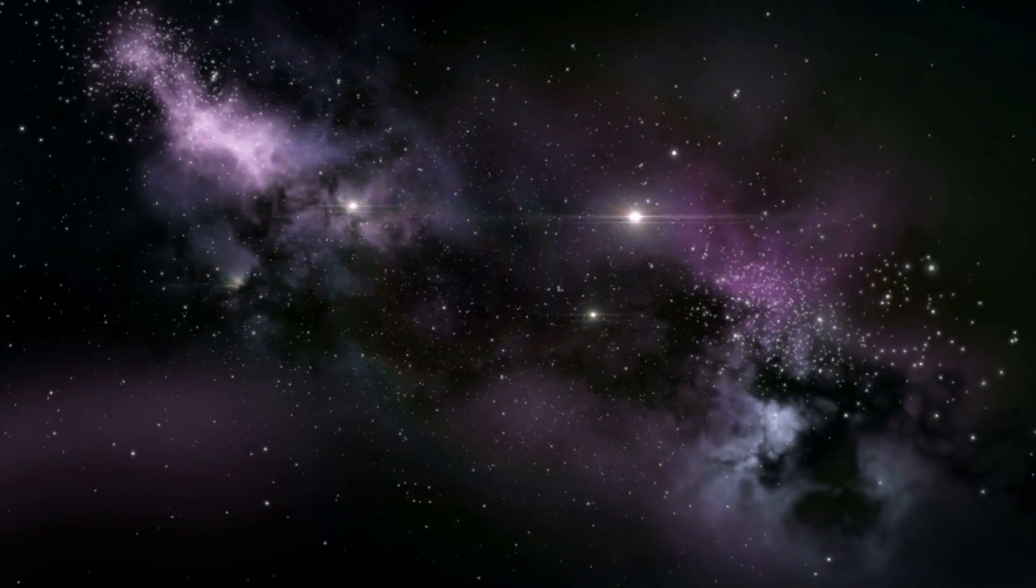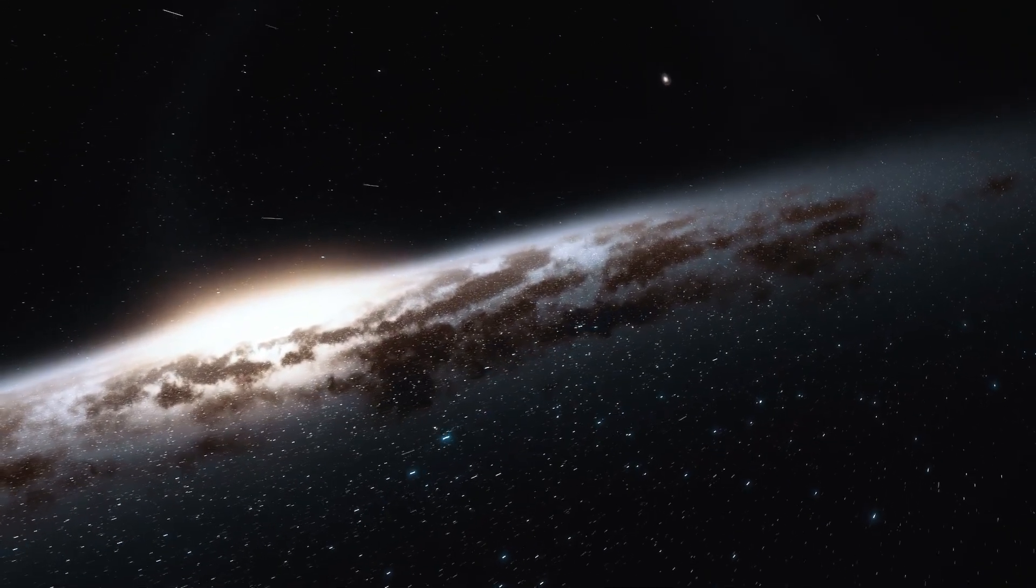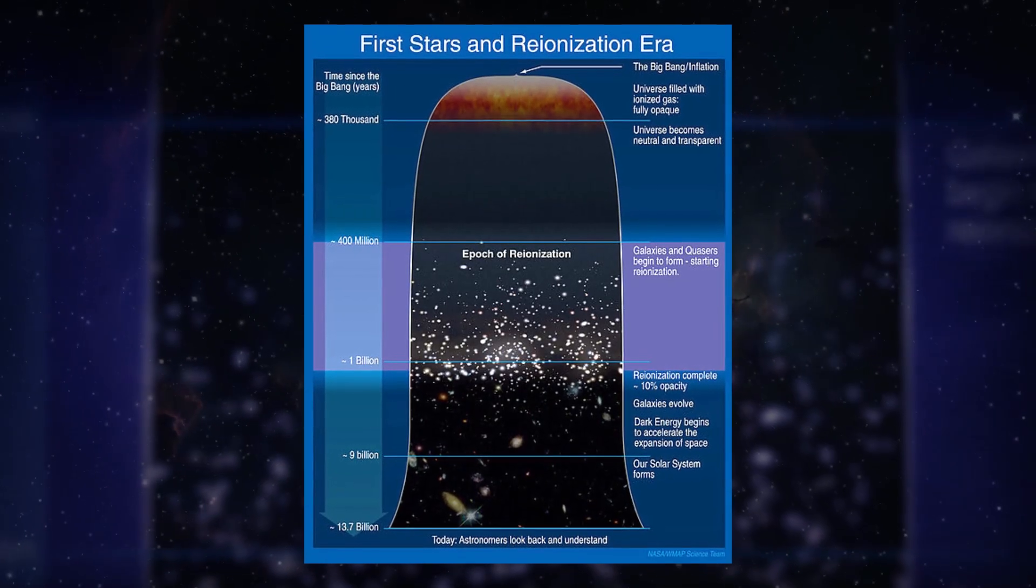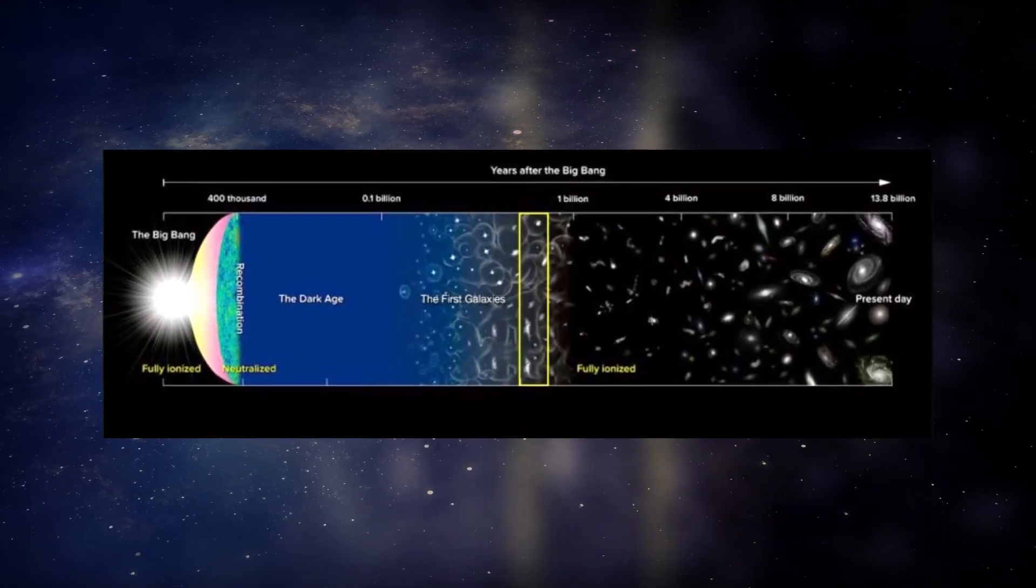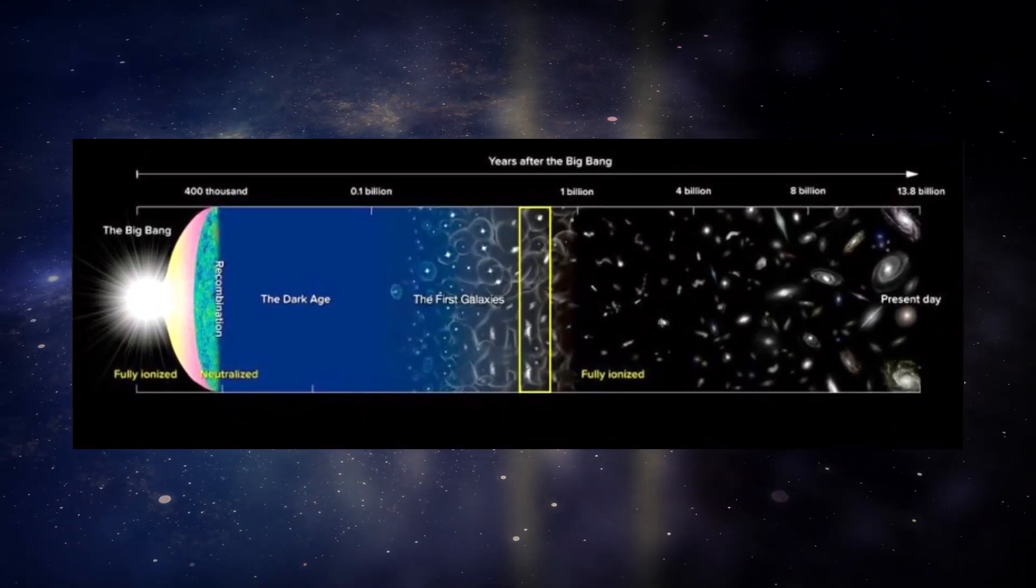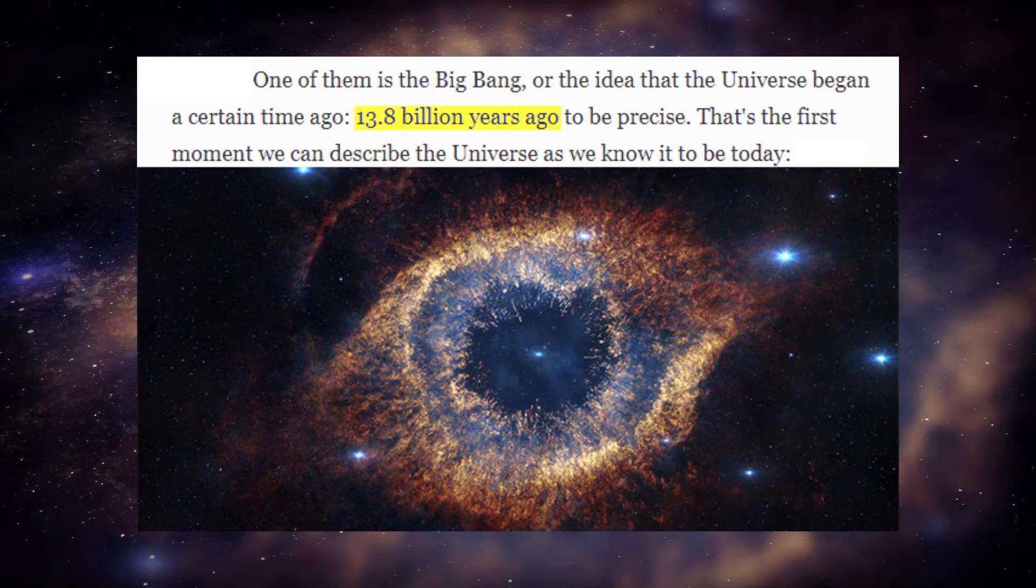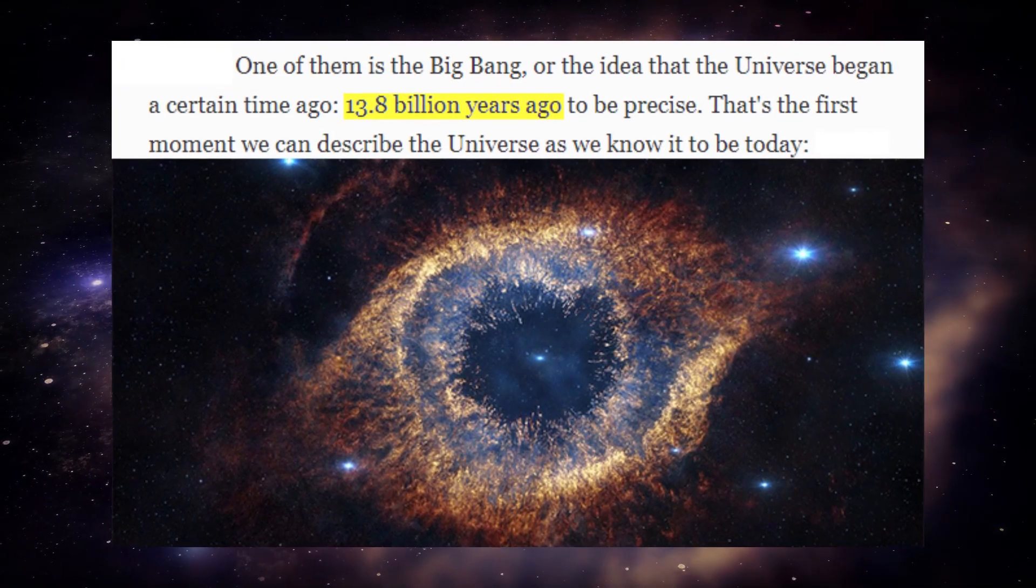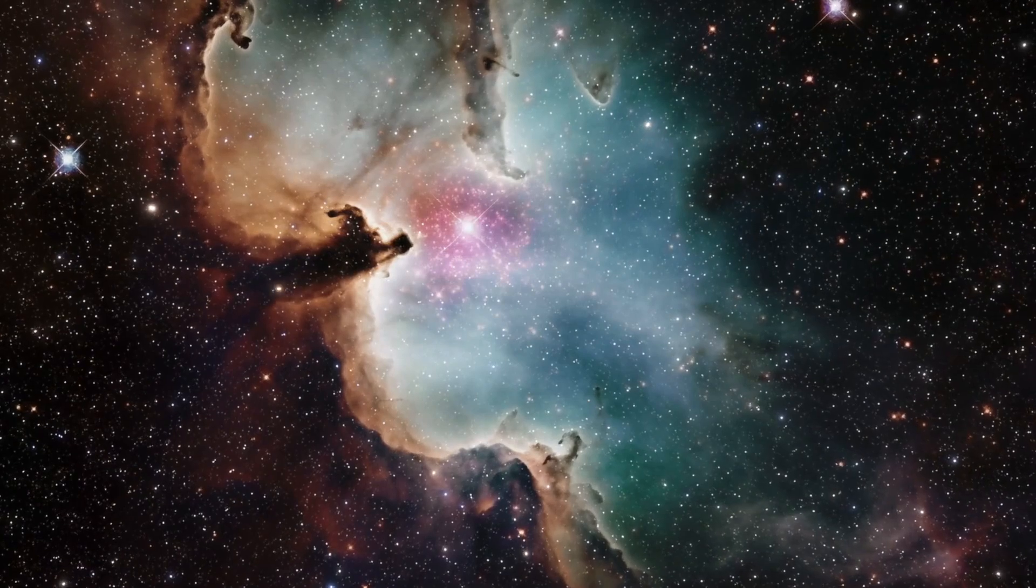In the early stages of the universe, it was filled with a mist of neutral hydrogen that stopped light from spreading. Only after this hydrogen changed to an ionized state could light move freely. This period, known as the epoch of reionization, is still not fully understood. We know it happened within the first billion years after the Big Bang, 13.8 billion years ago, but looking that far back into the early universe is tough.